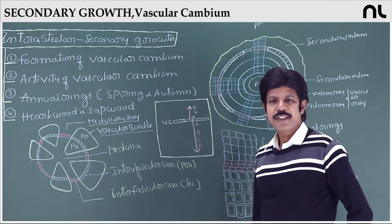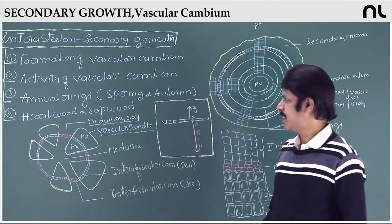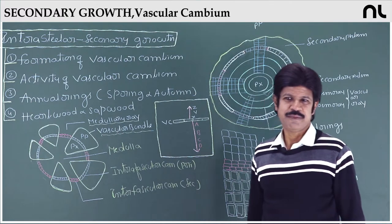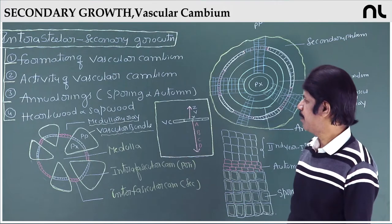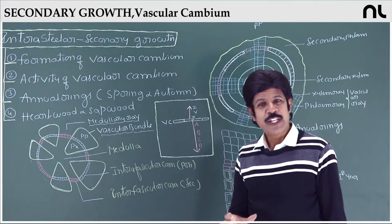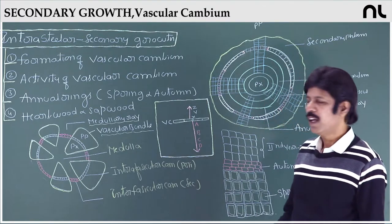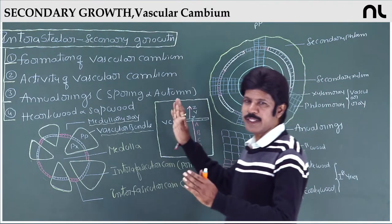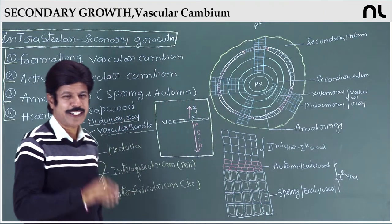In the case of intrasteelar secondary growth, that is intrasteelar changes, we have: formation of vascular cambium, then activity of vascular cambium, annual rings — that is spring wood and autumn wood — and heartwood and sapwood. All of these constitute intrasteelar secondary growth.